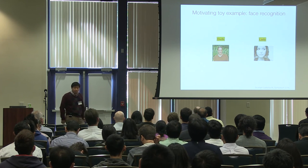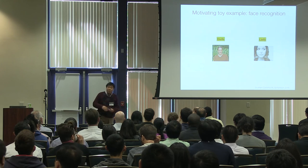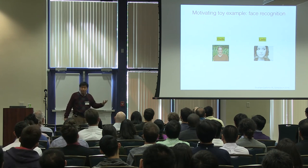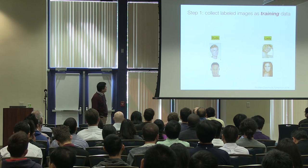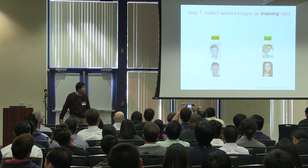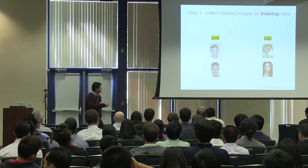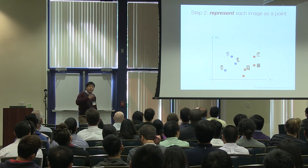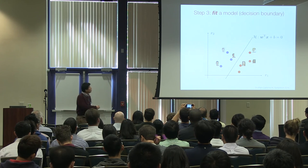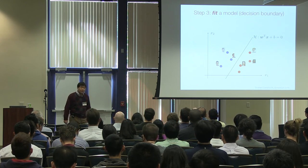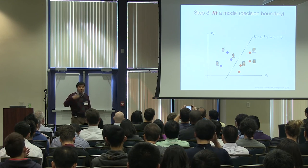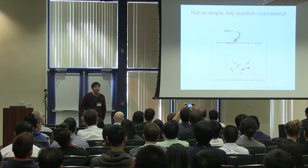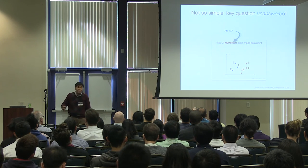Let's use a very tall-order example. Suppose we want to do face recognition — looking at facial images and deciding whether they are male or female. The typical way to do that is to collect a lot of labeled images as training data. We represent each image as a point in some space, fit a decision boundary to the training data, and use that for future classification. This is a very classical machine learning recipe.